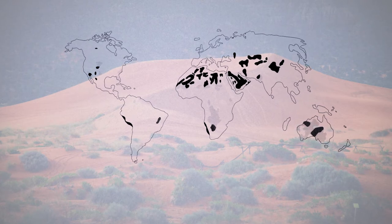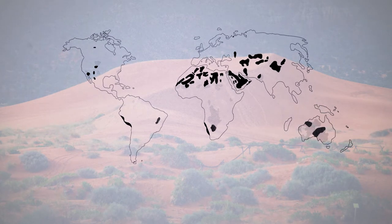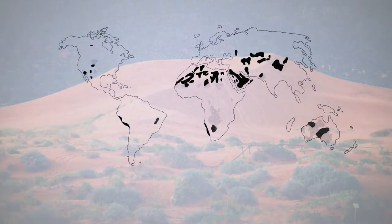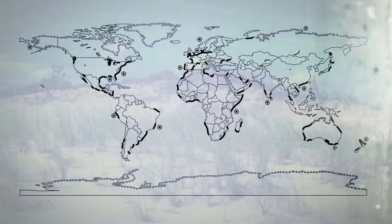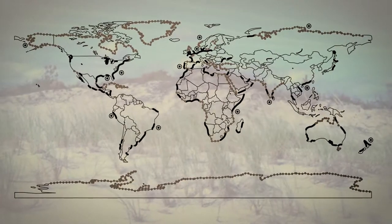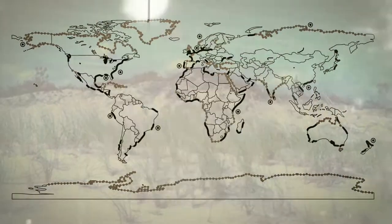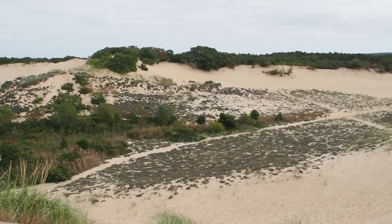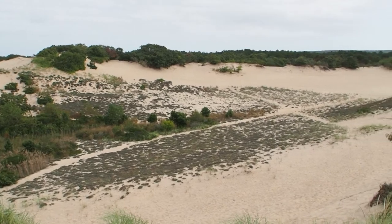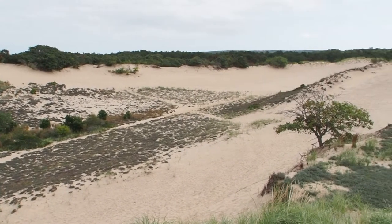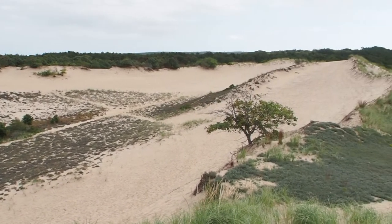Desert dunes may often take up the spotlight in our minds when we think of sand dunes, but coastal dunes cover a surprisingly large amount of our planet. And just like with desert dunes, wind plays a huge role in their formation, but so does water.